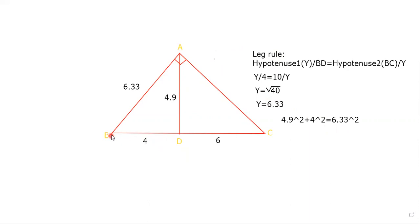Well, in this triangle ADB, 4.9 is the longer side, and in triangle ADC it corresponds to 4. So the ratios are the same.